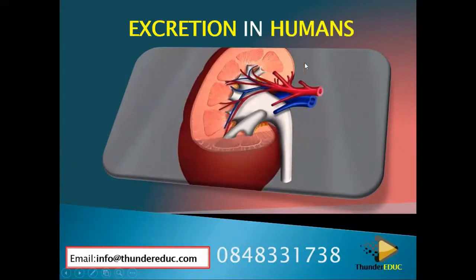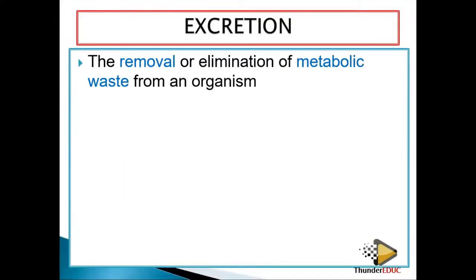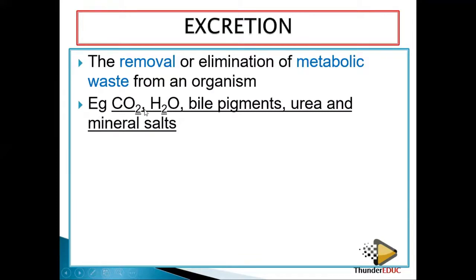Today we'll be looking at excretion in humans. Excretion is the removal or elimination of metabolic wastes from an organism. When we talk about metabolic, we're talking about breaking down processes which occur in the organism. Since we're talking about humans, we're talking about processes which occur in the human body. Wastes include carbon dioxide, bile pigment, and urea.